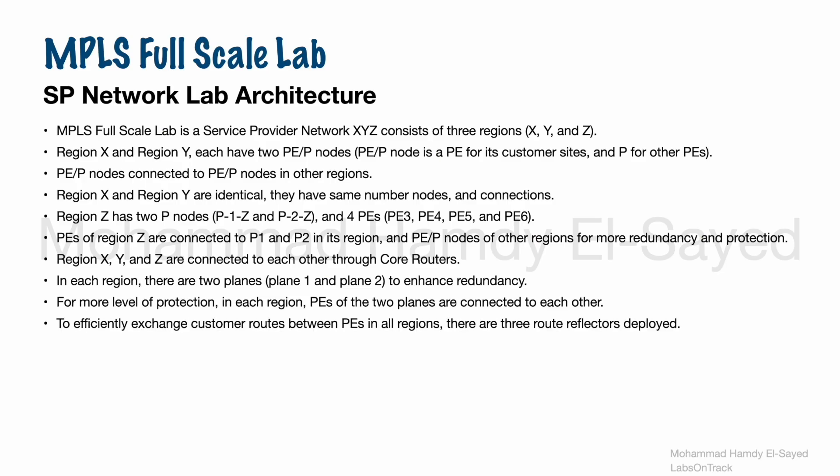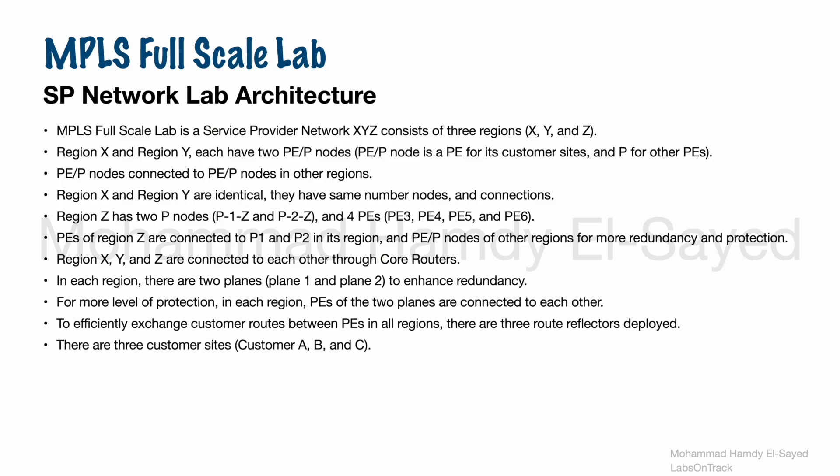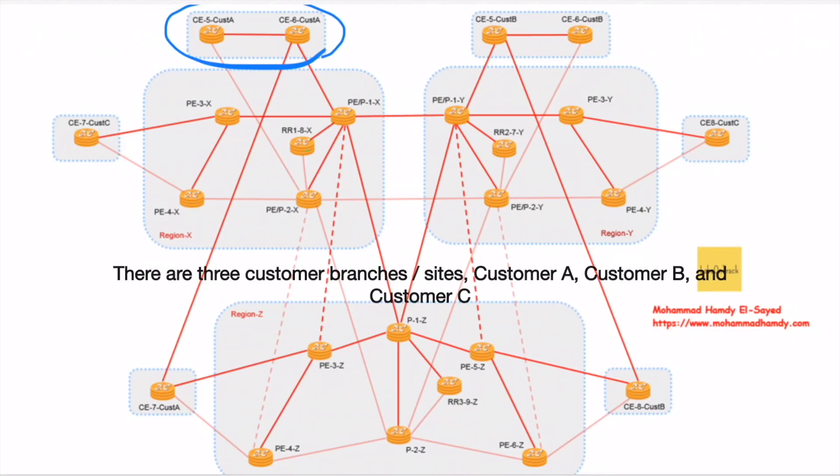There are three route reflectors: route reflector 1 resides in region X, route reflector 2 resides in region Y, and route reflector 3 resides in region Z. There are three customer branches: customer A, customer B, and customer C.